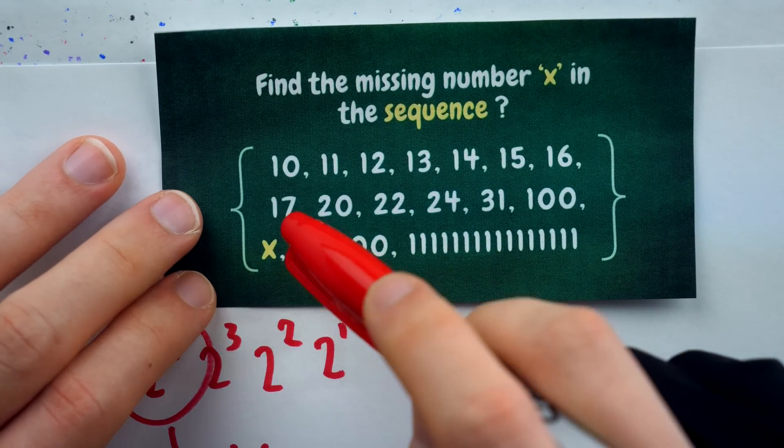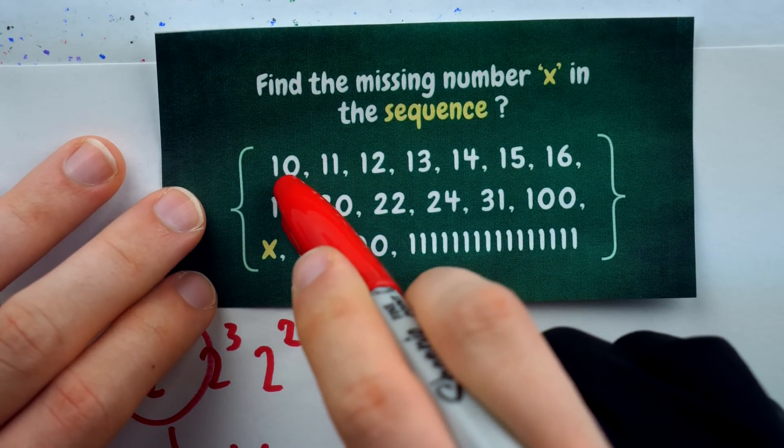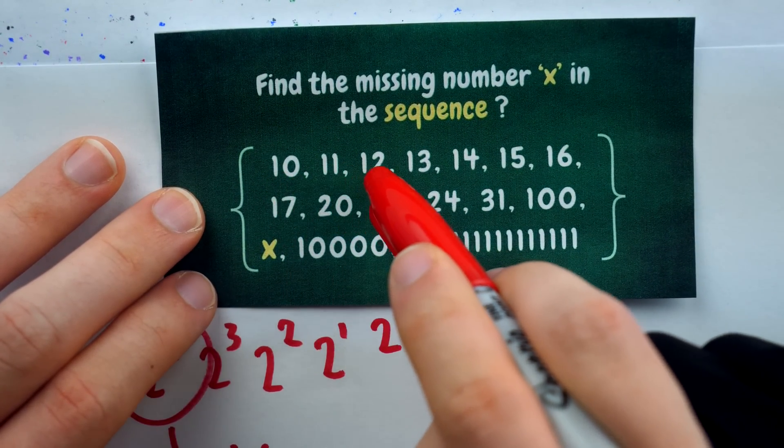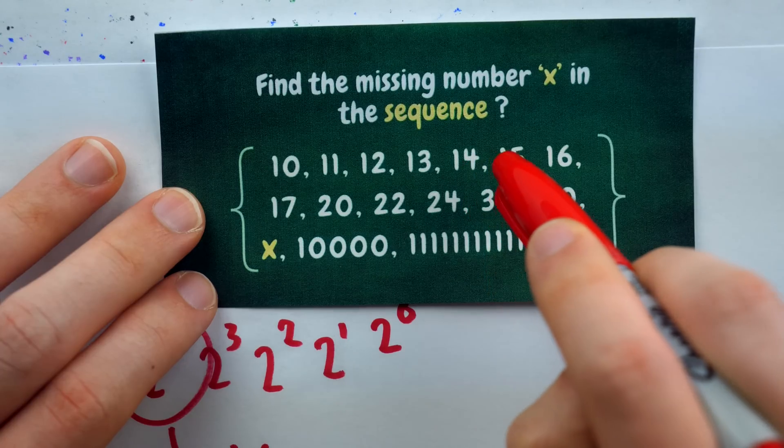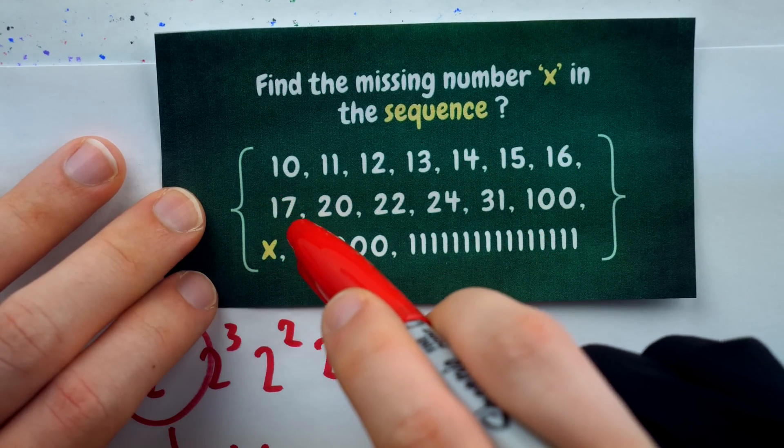And so the pattern is clear. This is 16 in base 16. Each number after is 16 in subsequently smaller bases.